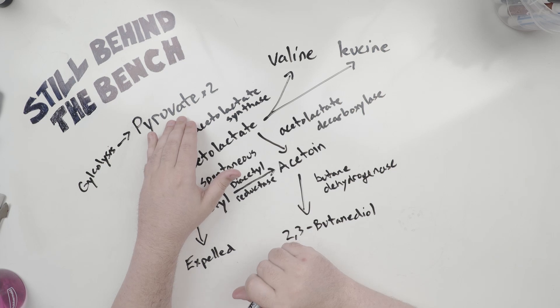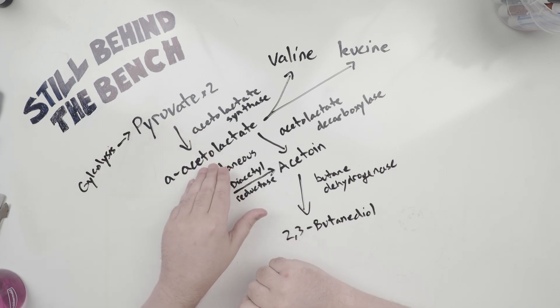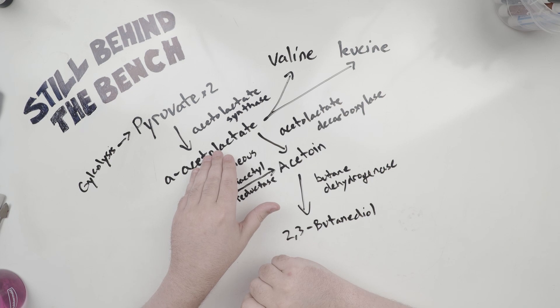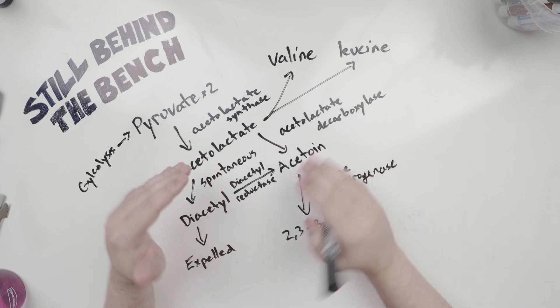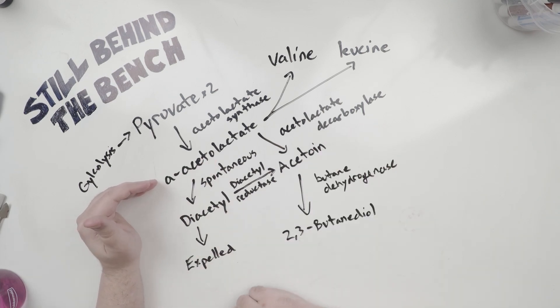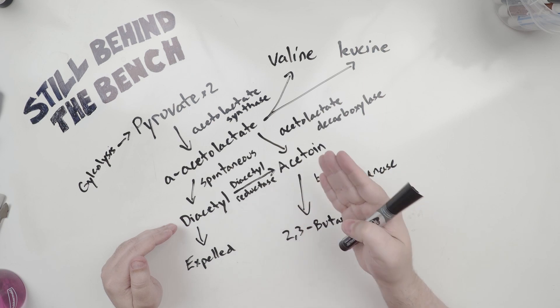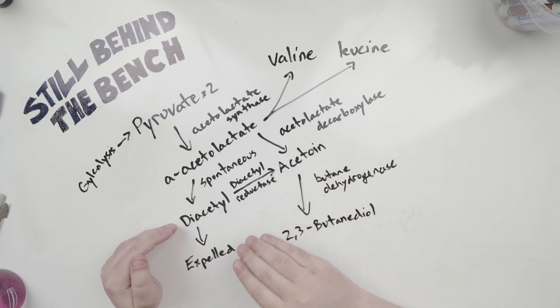So the first step is that two molecules of pyruvate get turned into alpha-acetolactate by an enzyme called acetolactate synthase. So if the amino acids are needed, these will get shunted off to the metabolic pathways to create valine or leucine. But what can happen is that alpha-acetolactate can spontaneously turn into diacetyl. It just happens. The yeast isn't creating it on purpose. For lack of a better word, it has no real awareness that it's being created at this point.